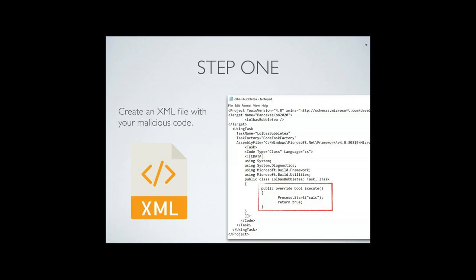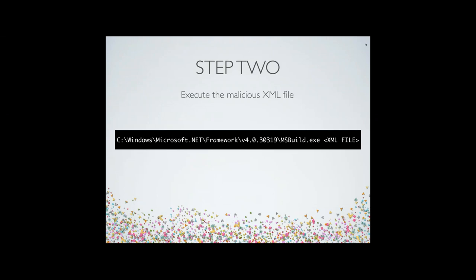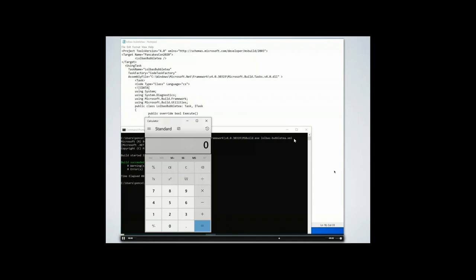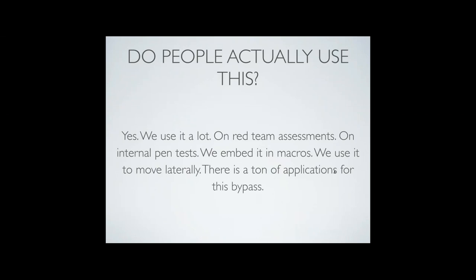Here's a quick example. In the background you can see this XML file — the same one I just showed — and then the command-line argument I'm going to call. You'll see that the build succeeded — it's green in the background — and then the calculator app opened up. Do people actually use this? Yes. We use it a lot — obviously in a much more complex way, but that general principle is used all the time. You can even embed it in a macro. There are a lot of different ways you could use this.